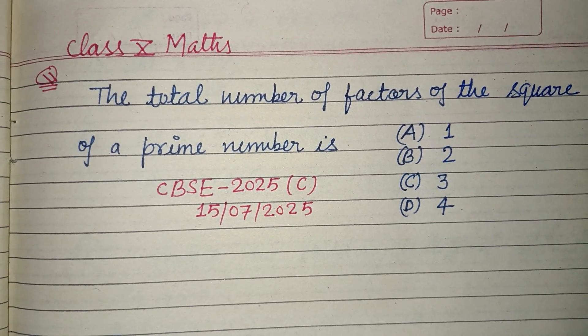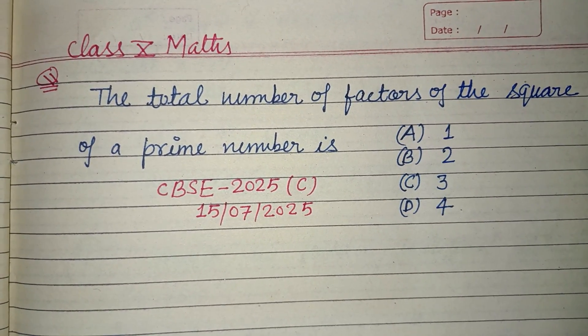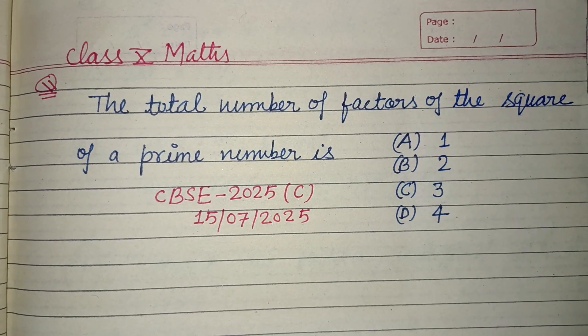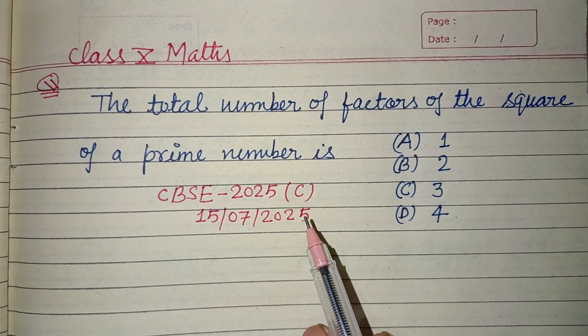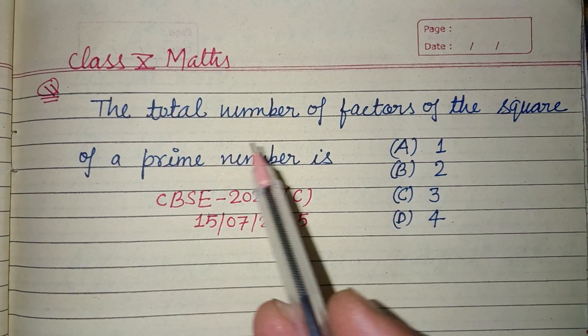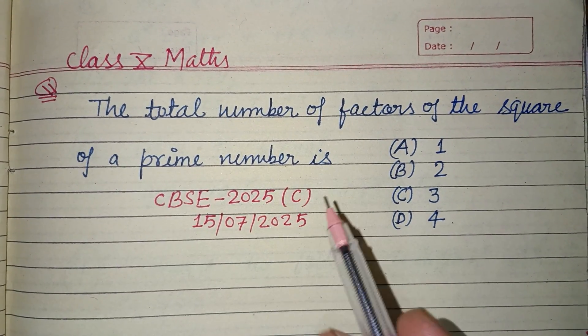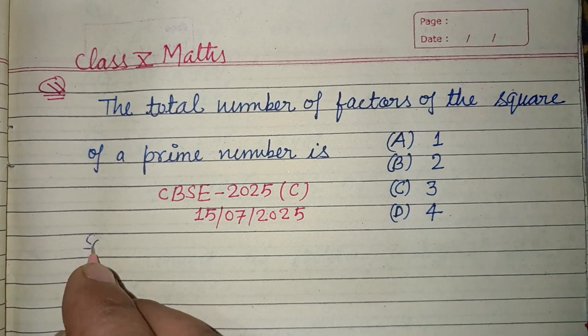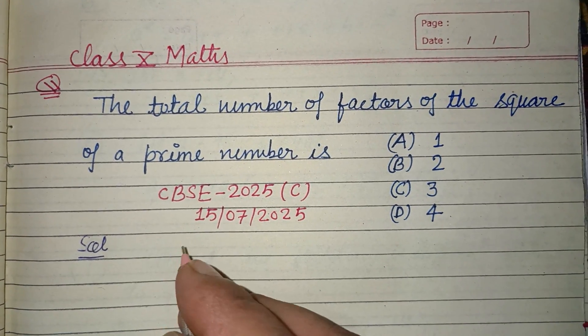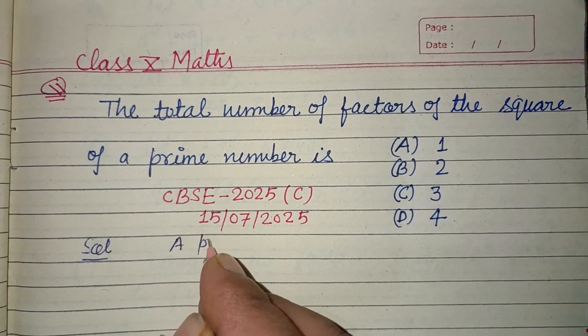Hello viewers, warm welcome to this YouTube channel. Question from CBSE 2025 compartment exam: The total number of factors of the square of a prime number is. You know that a prime number has two factors.